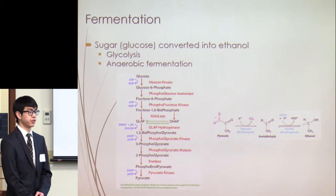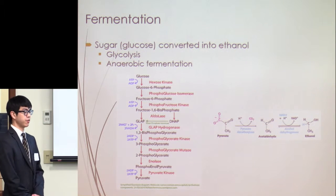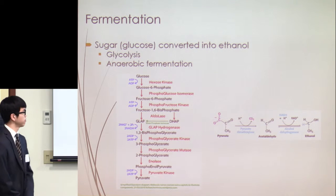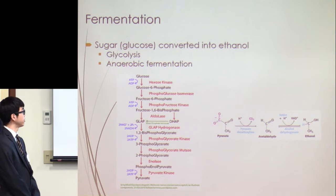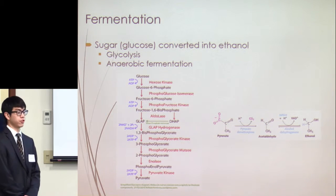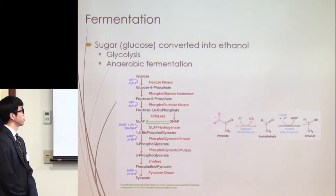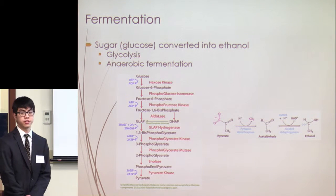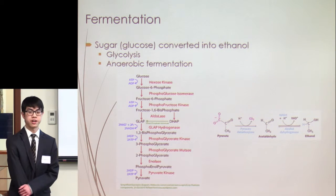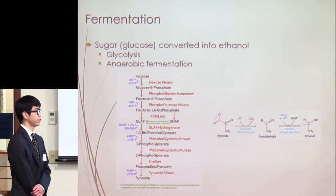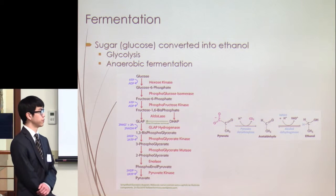After saccharification, we ferment the glucose into ethanol. This has two main parts: first is glycolysis — the breakdown of glucose into two pyruvate molecules. Pyruvate is a three-carbon molecule and a major intermediate in many biochemical pathways. It's important that yeast operates in anaerobic conditions, because that facilitates fermentation to ethanol rather than lactic acid fermentation. One carbon is removed from pyruvate as CO₂, yielding acetaldehyde, which is then converted into ethanol as our product.